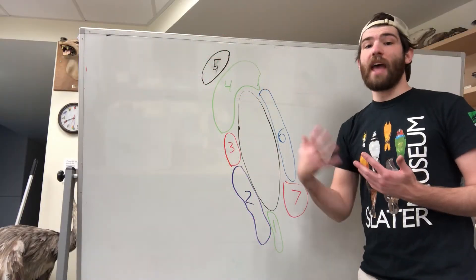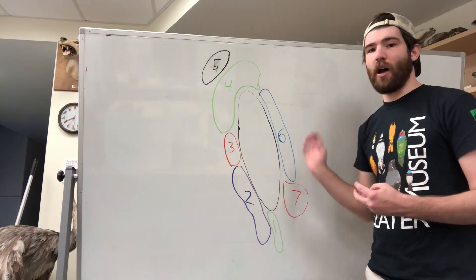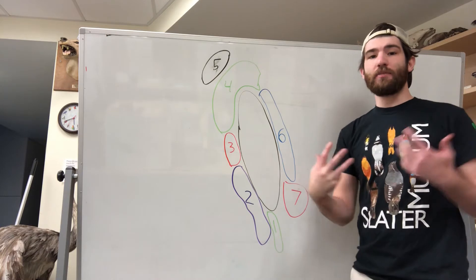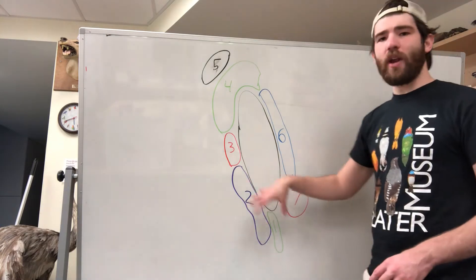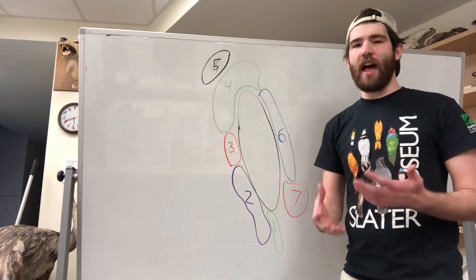So as you just saw in the actual map of our salamander populations, this species is broken into seven different subspecies, all kind of with their own area around the Central Valley of California.